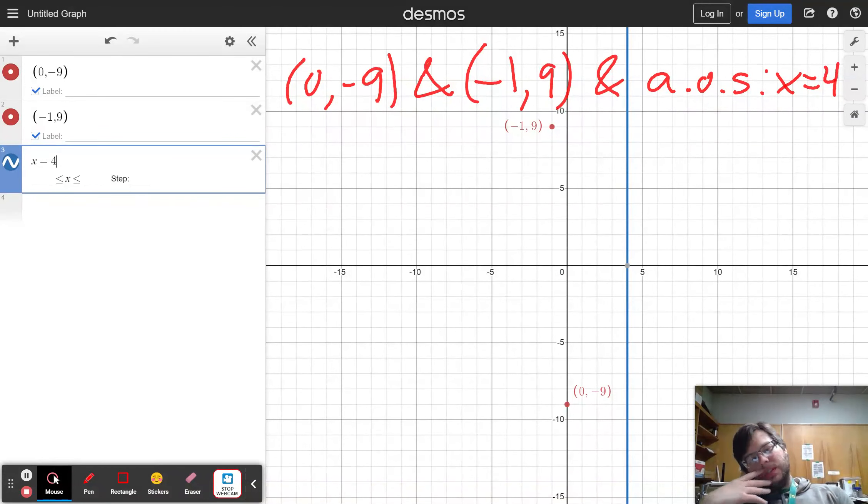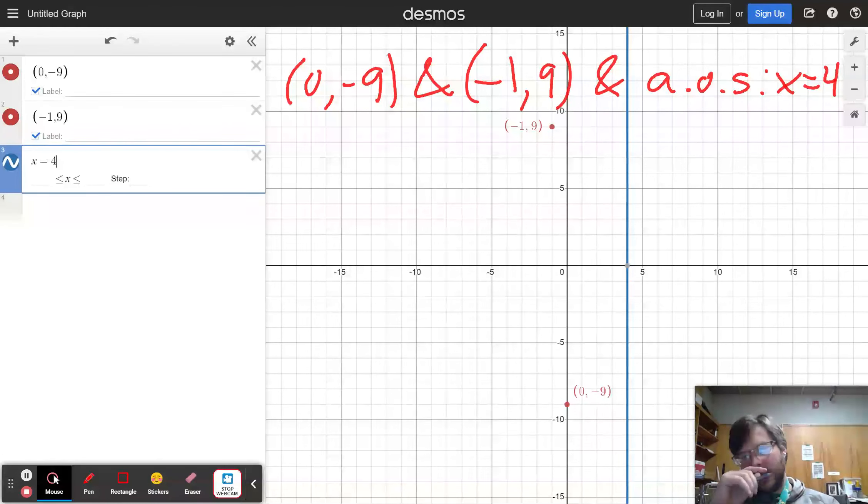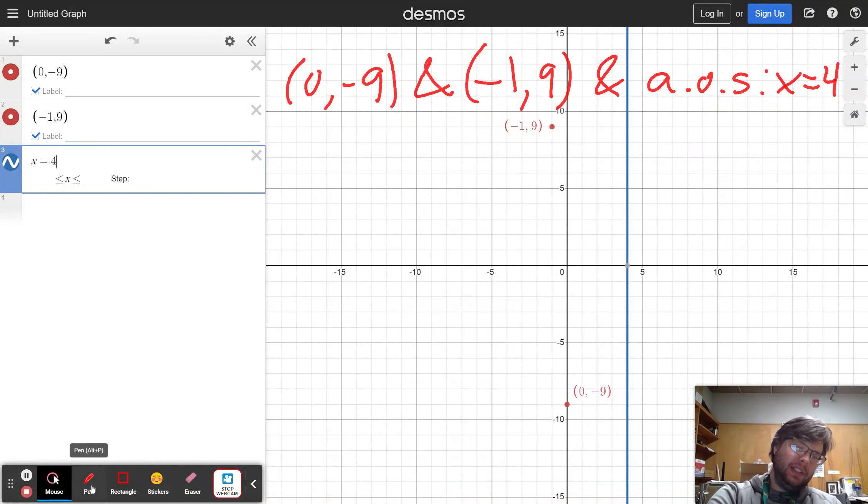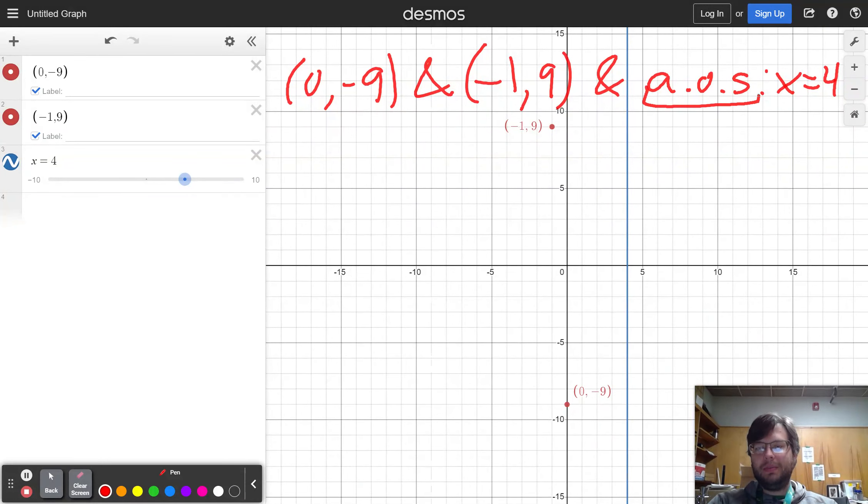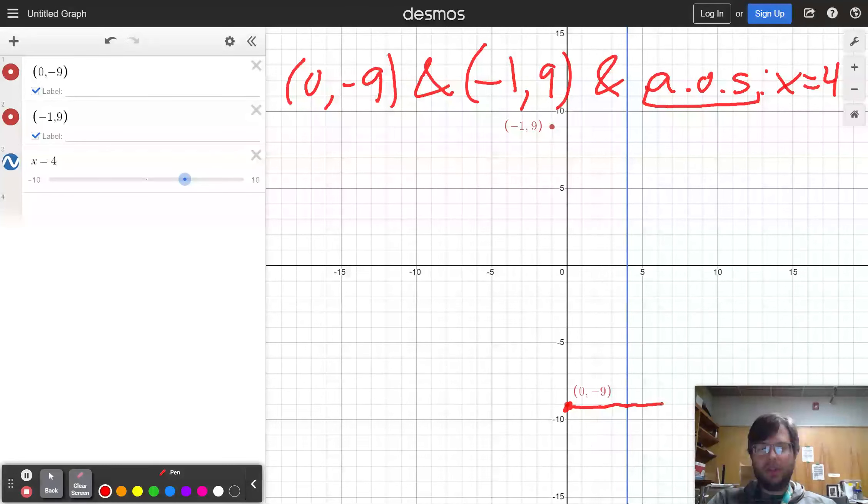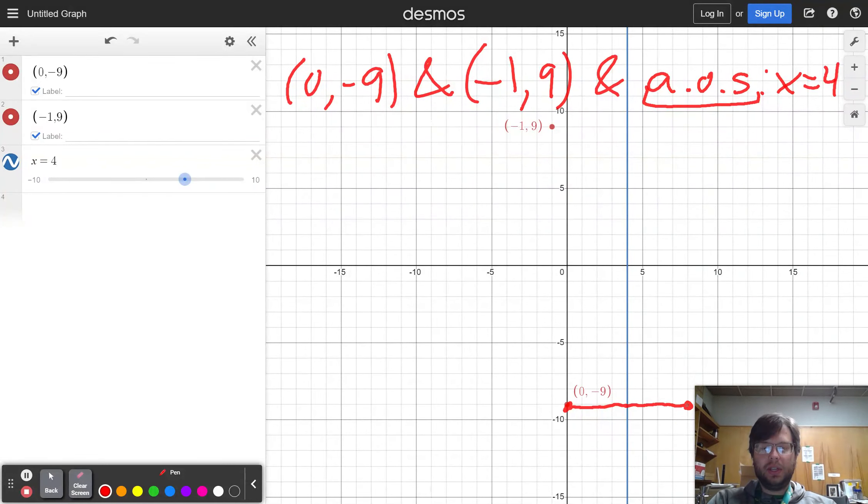But you do not have your entire quadratic equation. So the question is, how do you use that information to find the rest of the quadratic equation? And the idea is, axis of symmetry means you have a mirror image for each of the points that you were given. So for example,